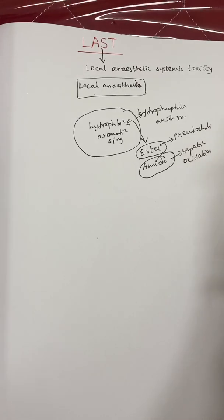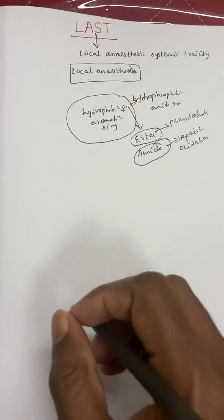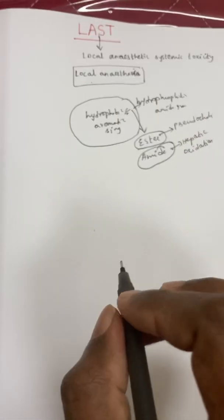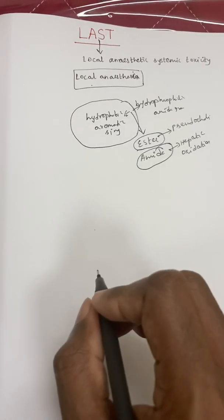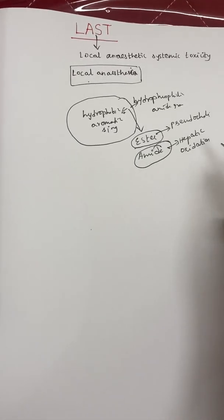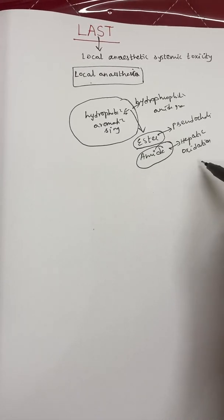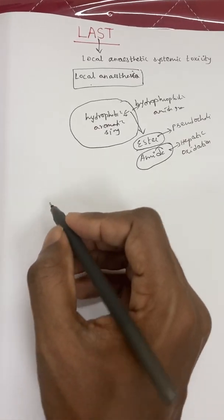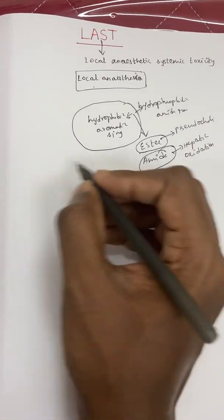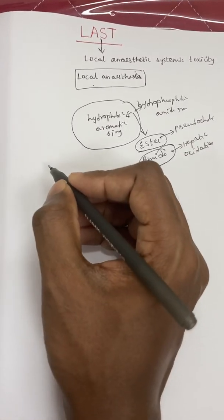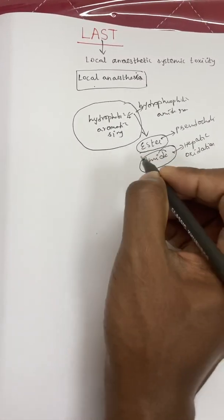The main difference between ester and amide-linked local anesthetics is metabolism. Ester-linked local anesthetics are metabolized by pseudocholinesterase enzyme in the plasma, while amide-linked local anesthetics are metabolized by hepatic oxidation. This difference in metabolism determines how toxicity will differ between these two classes.